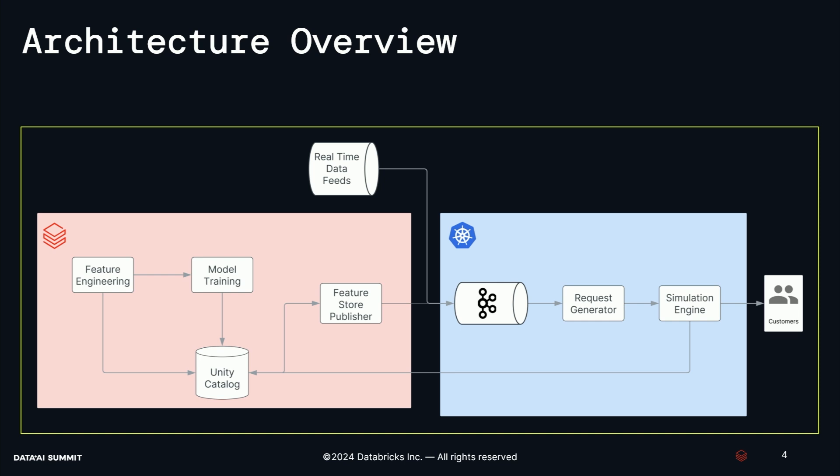Our architecture is roughly split into two halves. On the left-hand side you can see Databricks, our machine learning platform, and on the right-hand side is our Kubernetes environment. In Databricks we're performing a wide variety of common data science tasks like feature engineering and model training. All data and modeling assets are stored in Unity Catalog, and we're leveraging Unity Catalog for governance and control.